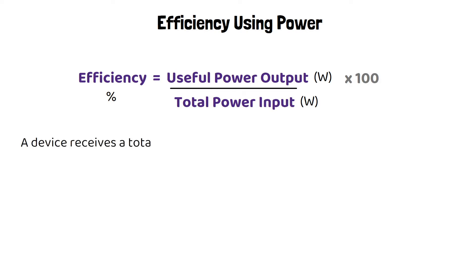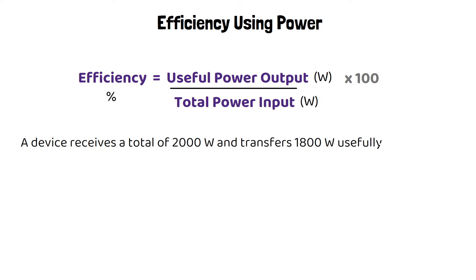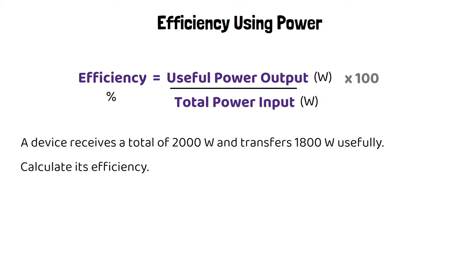Here's an example: a device receives a total of 2000 watts and transfers 1800 watts usefully — calculate its efficiency. We substitute our power values in: useful power output is 1800 and total power input is 2000. That gives an efficiency of 0.9, or 90% as a percentage.